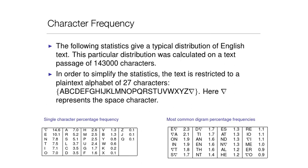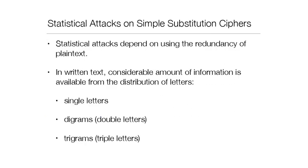Statistical attacks on simple substitution ciphers exploit the redundancy of plaintext. In written text, considerable information is available from the distribution of single letters, digrams (combinations of two letters), and trigrams. Analyzing these frequency patterns, we can easily break Caesar cipher, linear cipher, and random substitution cipher.